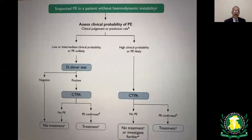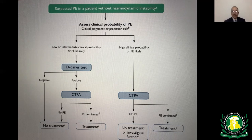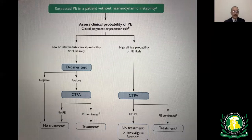To summarize the diagnostic algorithm for hemodynamically stable suspected PE: if pre-test probability is low or intermediate, check D-dimer; negative D-dimer rules out PE. If D-dimer is positive, confirm with CT pulmonary angiography. If pre-test probability is high, skip D-dimer and go directly to CTA; positive confirms PE, negative rules it out.